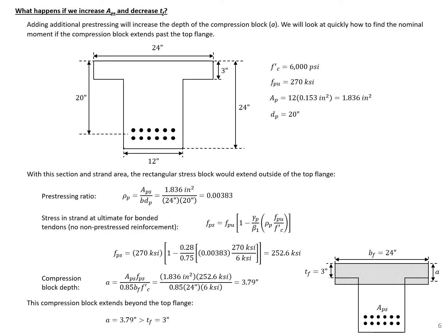In the next part of this example, we're going to see what happens if we increase our area of prestressing and decrease the thickness of our flange. We're looking at a revised section where we have twice as much prestressing and our top flange thickness is half of what we had before, or three inches. Going through this quickly, we find our prestressing ratio the same way as before — total prestress area divided by the width of the compression face times the depth of the strands. We then use that with our other values to calculate f sub ps equal to 252.6 ksi.